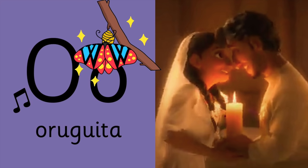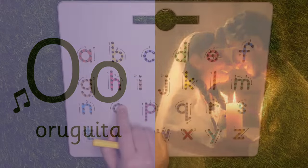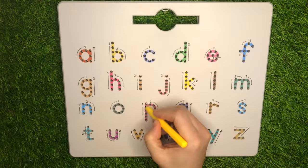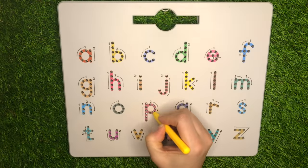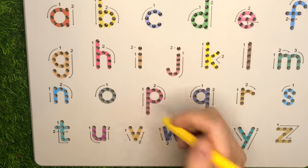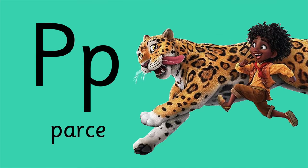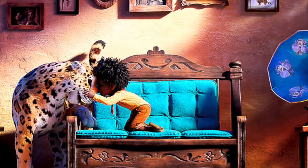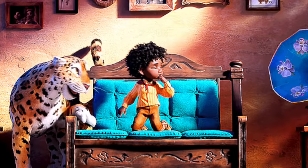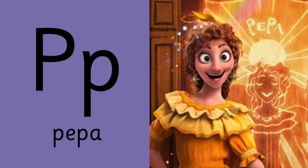P is for the name of the jaguar who is friends with Antonio. Do you remember the name? It's Parce. And also P is for Peppa.